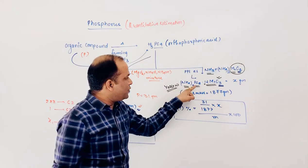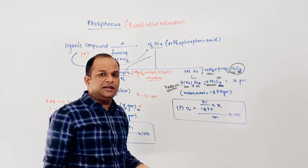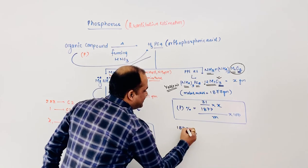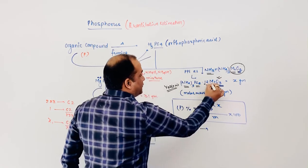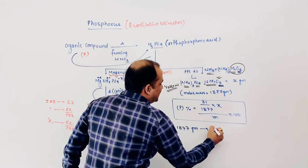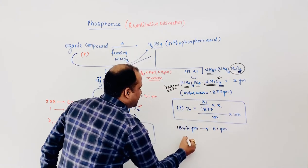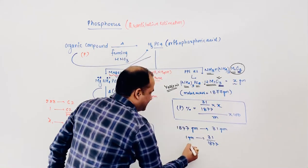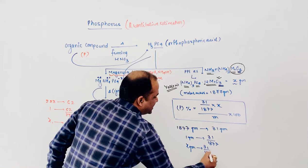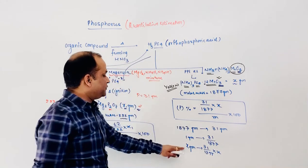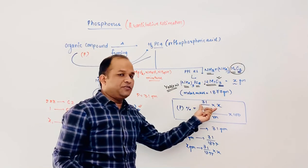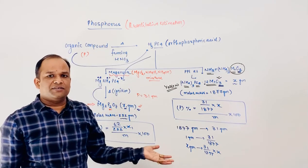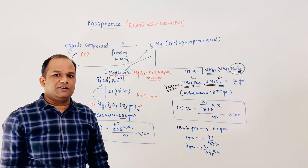Just like the previous method, one mole of ammonium phosphomolybdate contains only one phosphorus atom. Its molar mass is 1877 grams. So 1877 grams of this compound contains 31 grams of phosphorus. Therefore X1 grams contains (31/1877) × X1 grams of phosphorus. Dividing by the mass of the organic compound and multiplying by 100 gives the percentage of phosphorus. These are the two methods to find the percentage of phosphorus in an organic compound.